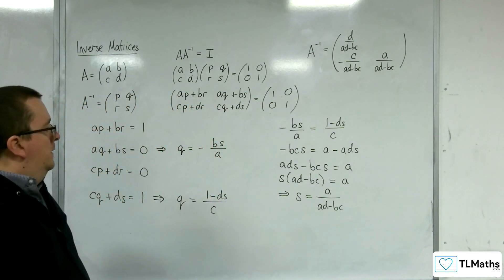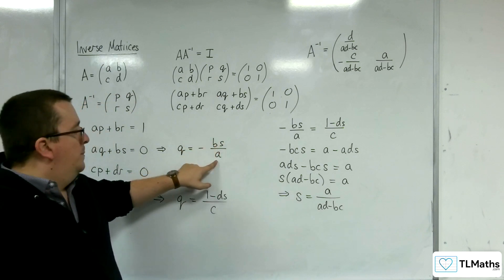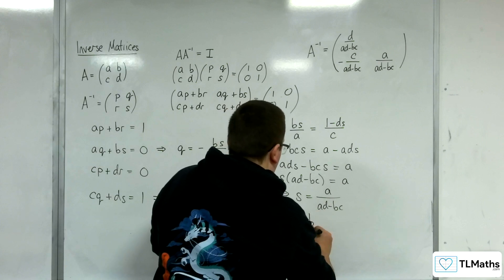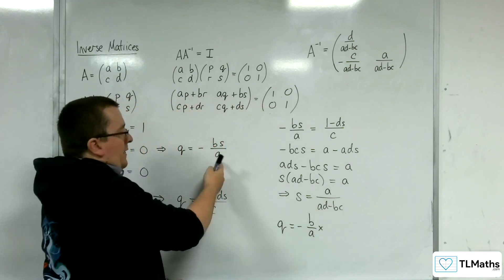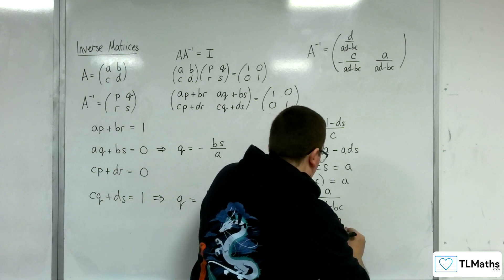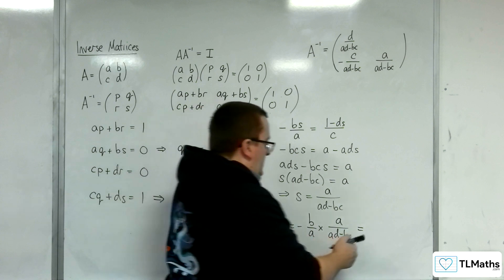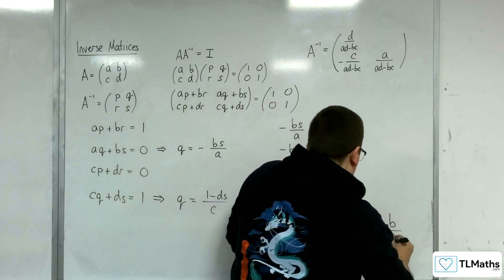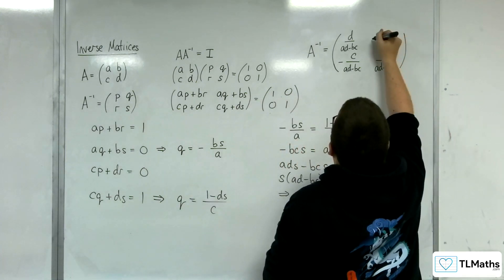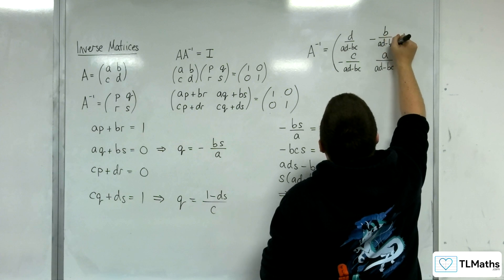Substituting S back into Q = −BS/A is easiest to get Q. So Q = −B/A × A/(AD − BC). The A's cancel, leaving Q = −B / (AD − BC). And so that is Q.